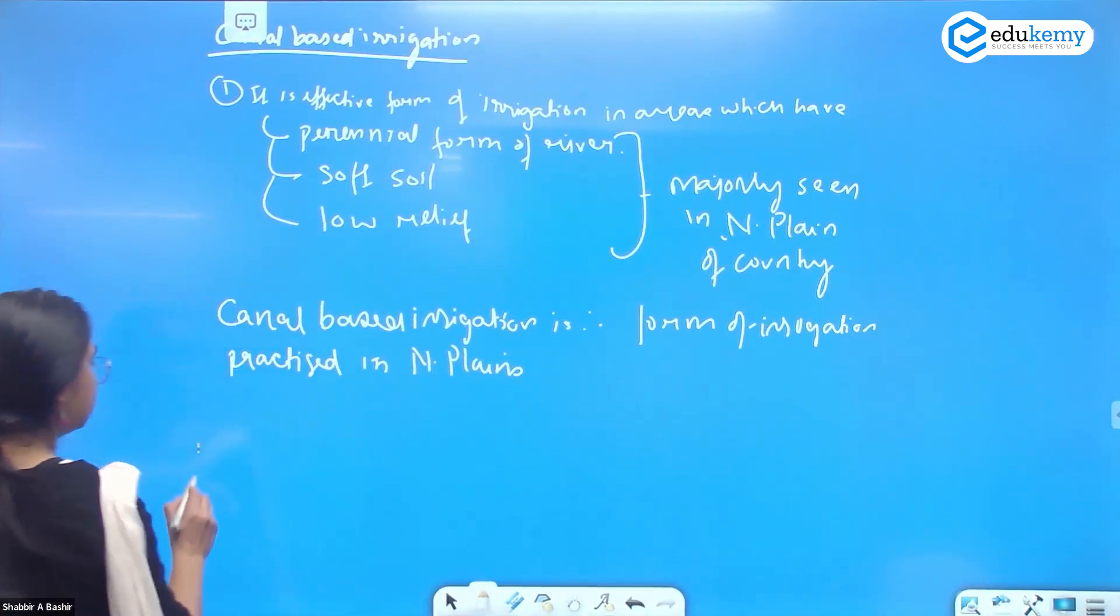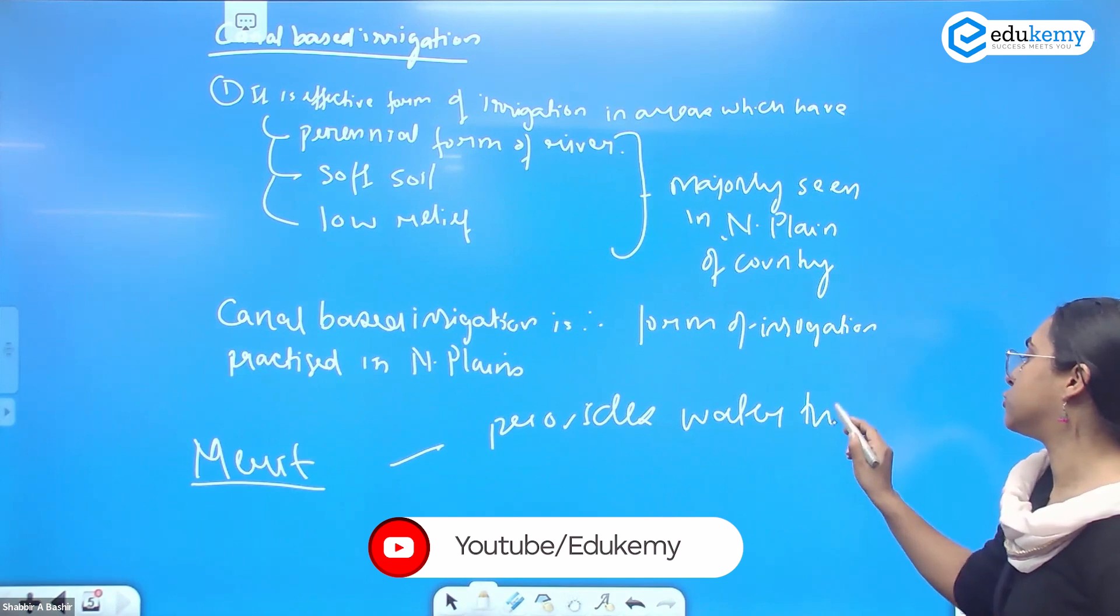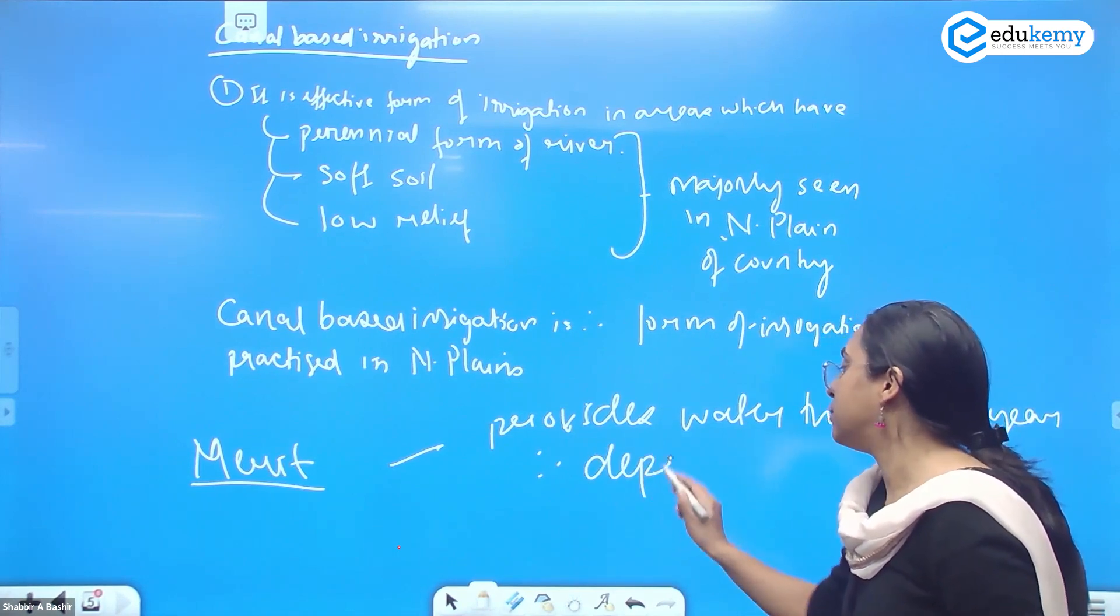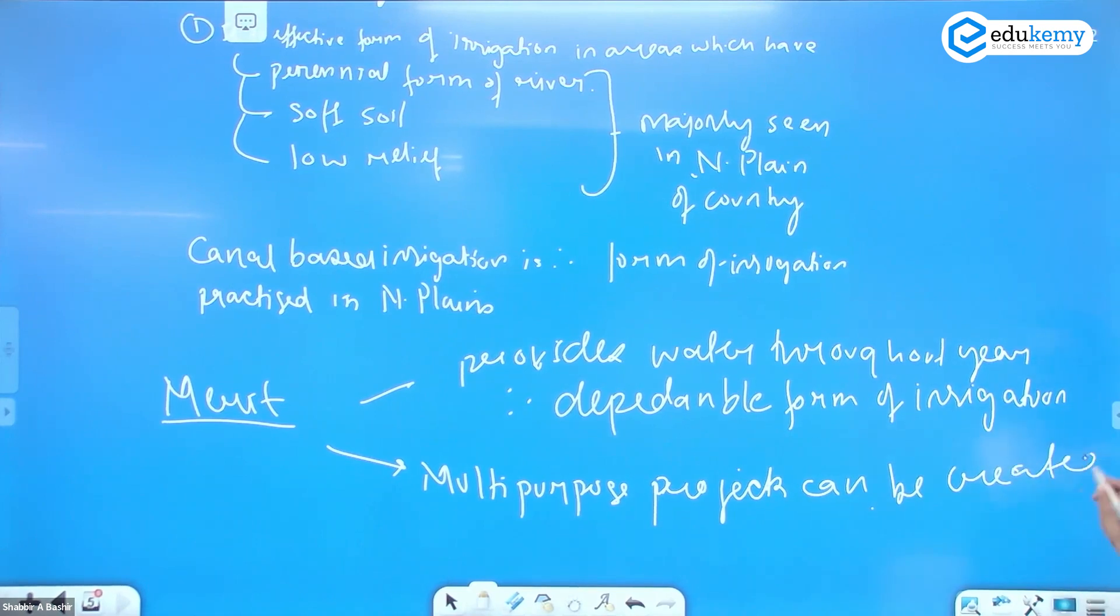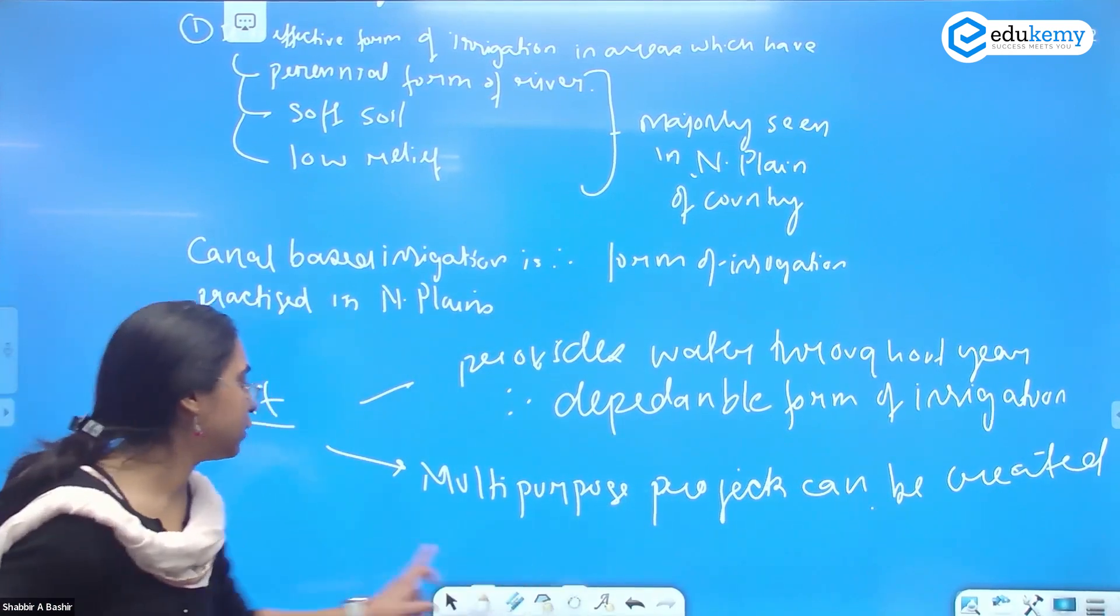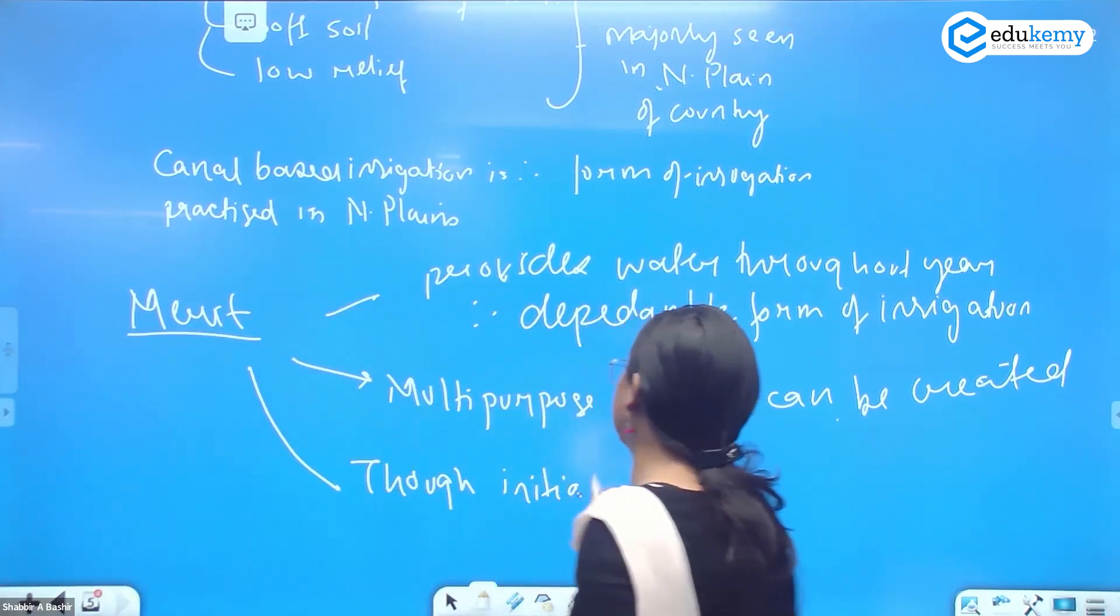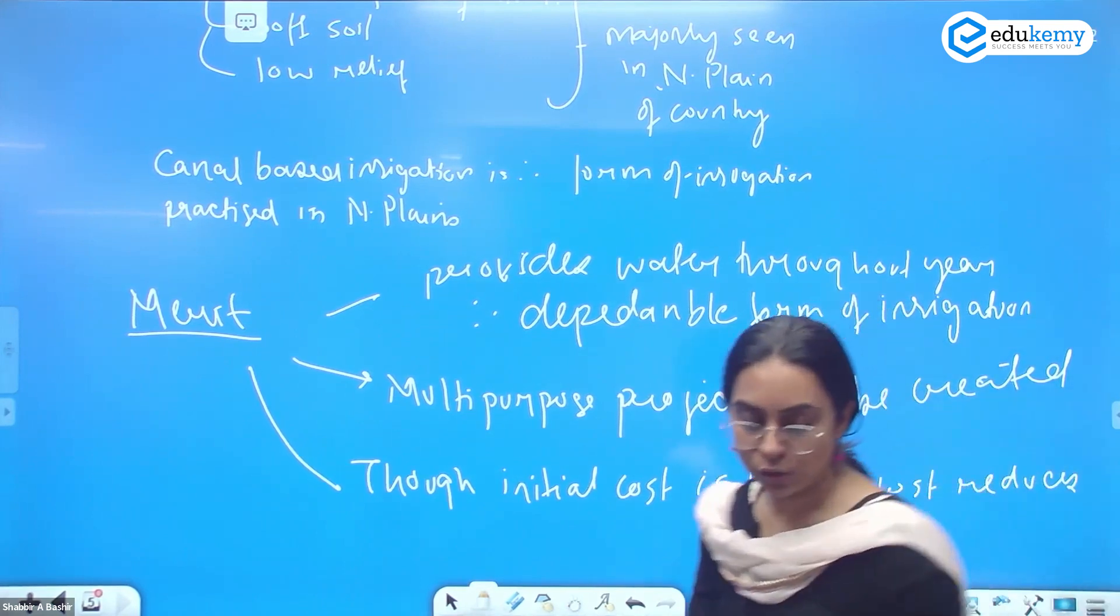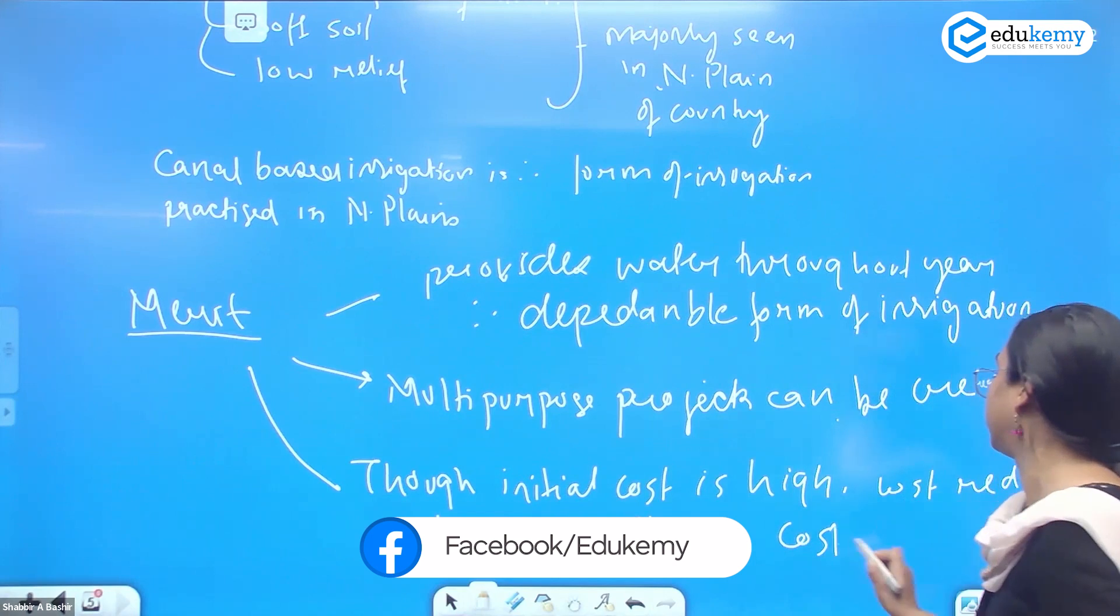What is the merit? It provides water throughout the year and therefore it is a dependable form of irrigation. Multipurpose projects can be created, not just for irrigation but also for electricity generation. Though the initial cost is high for canal-based irrigation, the cost reduces in the longer run. Therefore, it is cost effective in the longer run.